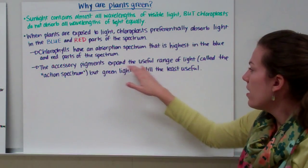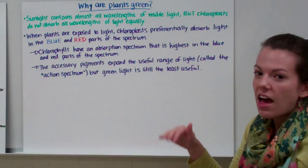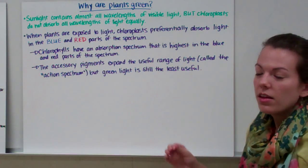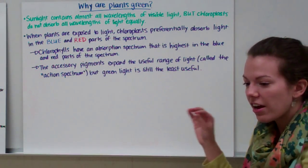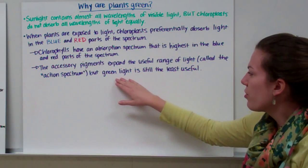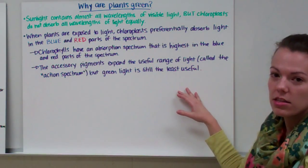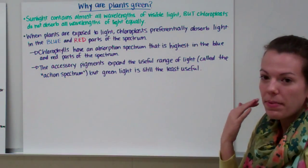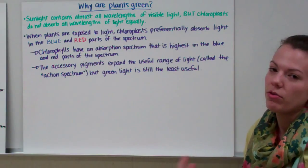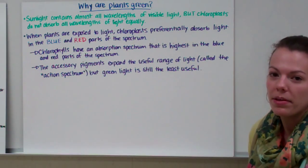Accessory pigments expand the useful range of light, so they have absorption spectrums that are higher in different parts of the visible light. But it turns out that green light is still the least useful. So green light is absorbed the least. It's reflected back to your eye, and so what you see is that reflected green light. And that's why plants are green.